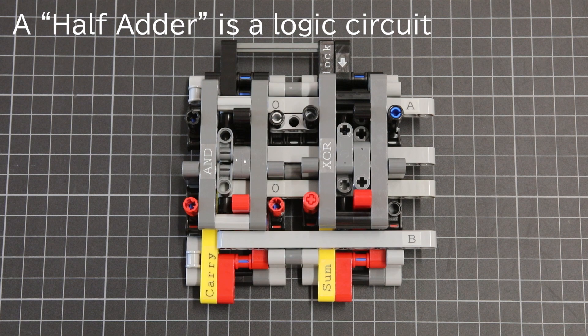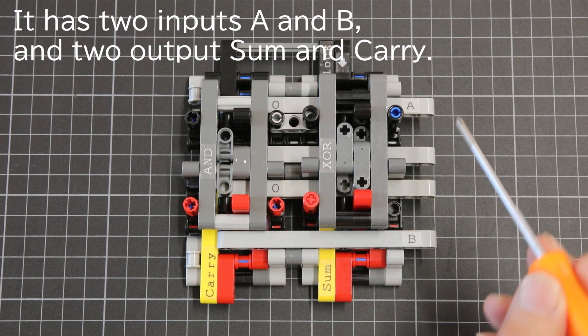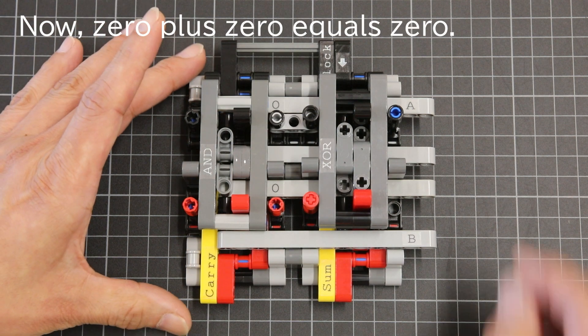A half-adder is a logic circuit which performs addition of two single-bit binary numbers. It has two inputs, A and B, and two outputs, Sum and Carry.